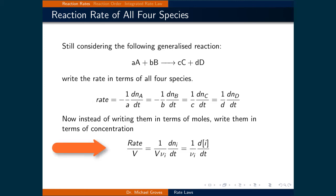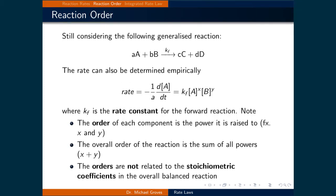If we want to express reagent amounts as concentrations instead of moles, we divide through the general expression by the volume of the solution. Considering the same generalized reaction, the rate at which the concentration of a species decreases — for example A — is governed by the product of the concentrations of all species that A interacts with, raised to some power. The rate equals k_f times [A]^x times [B]^y, where k_f is called the rate constant.